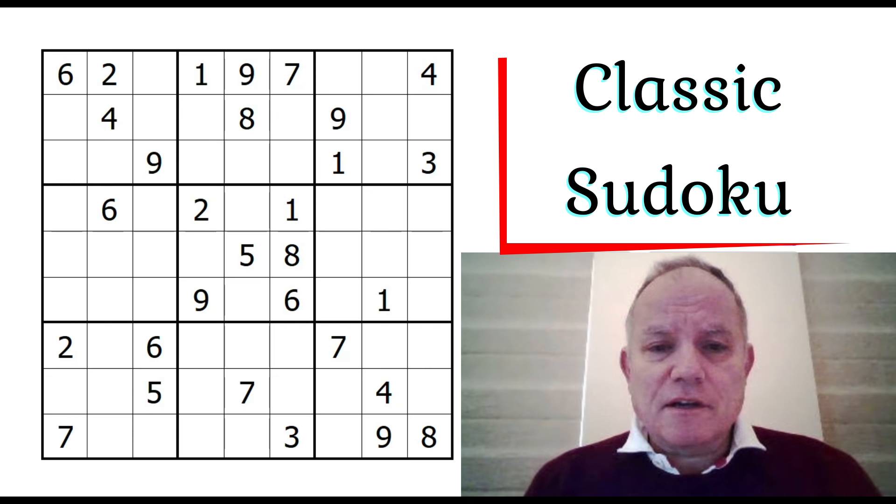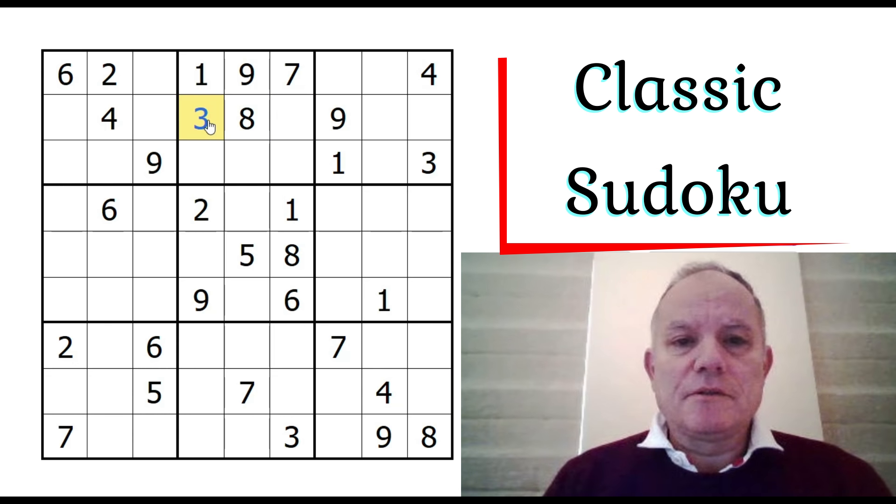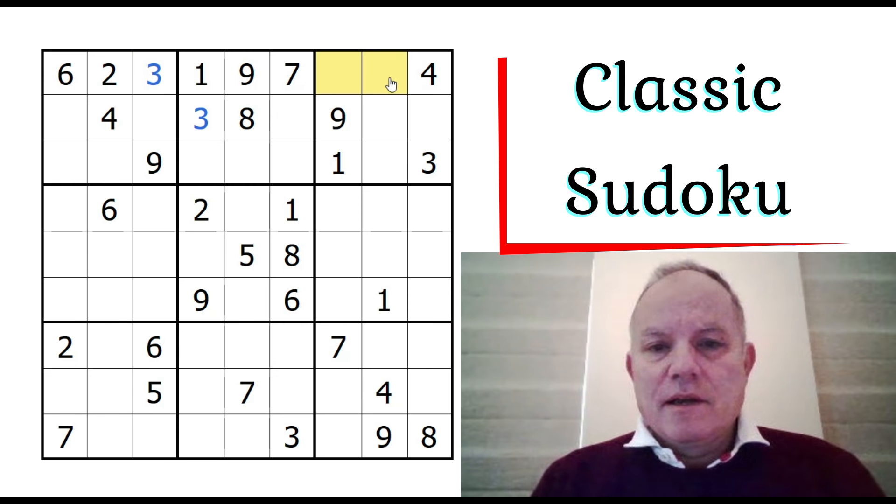There's quite a lot of givens in the grid for it to be a very tough puzzle. Let's see how we do. This three at the top is clearly eliminating these cells and the other three in the grid here is eliminating that one. So we can fill in a three there and a three there, and that gives us an eight five pair up here.